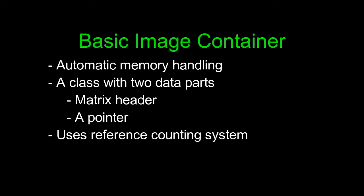Mat class consists of two data parts. One is the matrix header, which stores information like size of image, methods used to store image, color space of image, etc. And another one is a pointer to the matrix containing all the pixel values of the image.